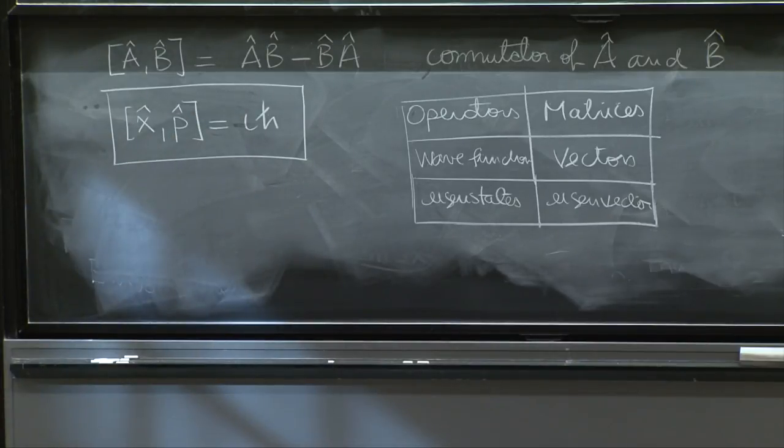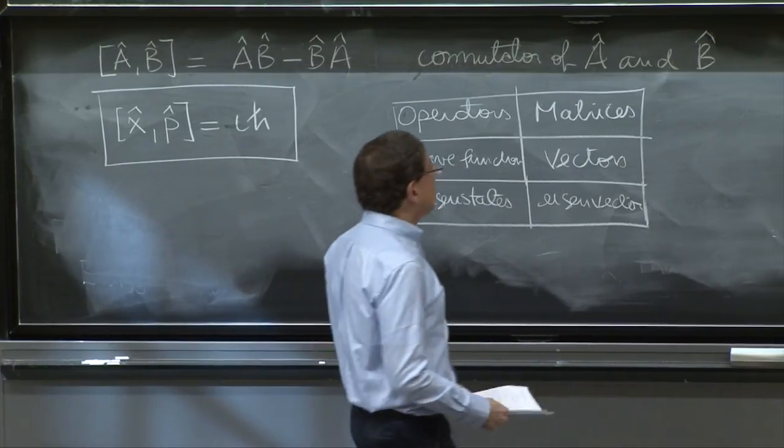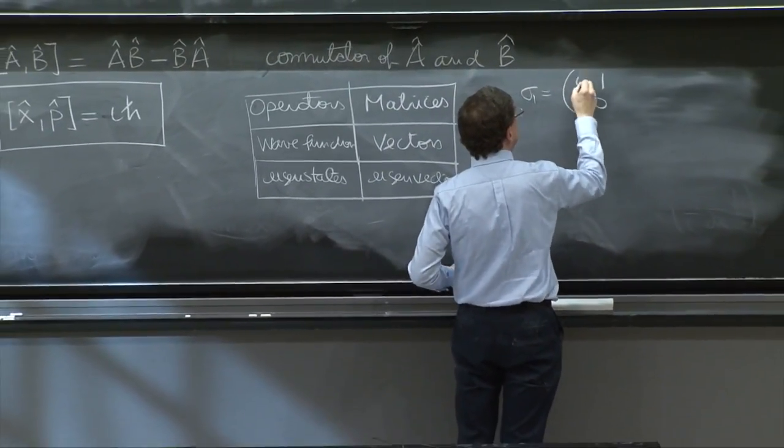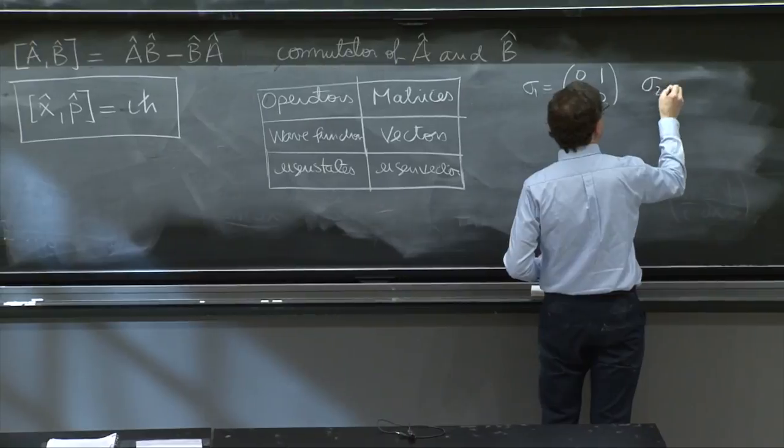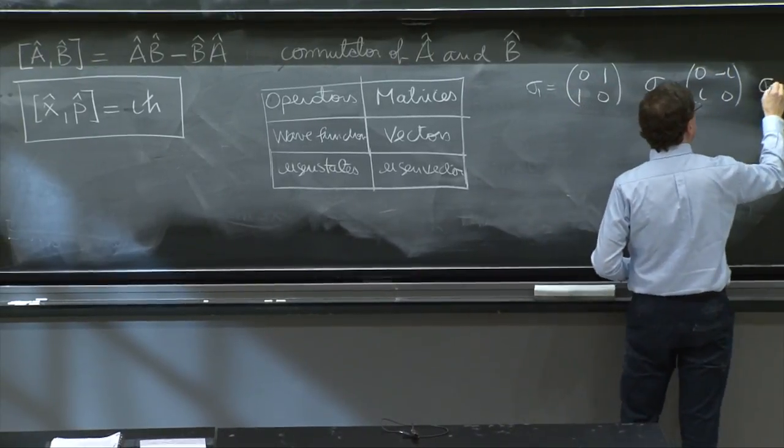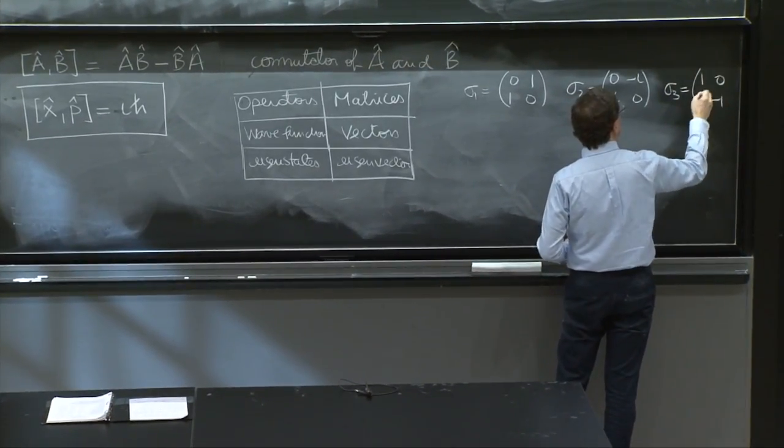So matrices do the same thing. They don't necessarily commute. There are very many examples of that. I might as well give you a little example that is famous in the theory of spin, spin 1 half. There's the Pauli matrices. Sigma 1 is equal to 0, 1, 1, 0. Sigma 2 is 0 minus i, i, 0. And sigma 3 is 1 minus 1, 0, 0.